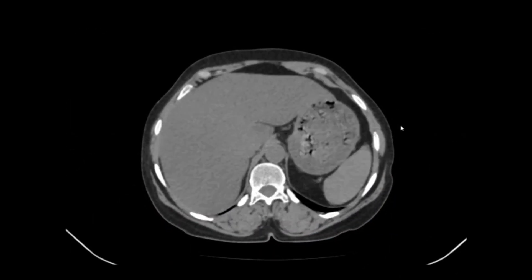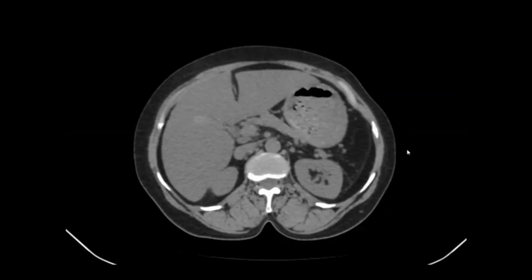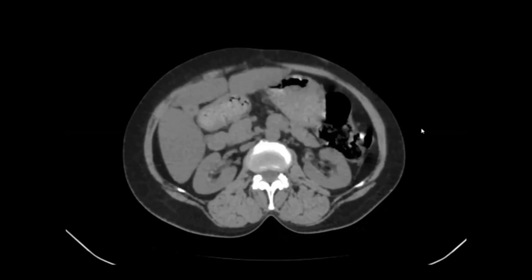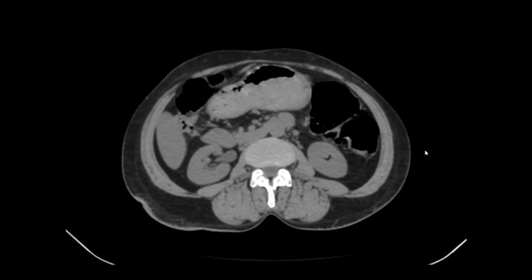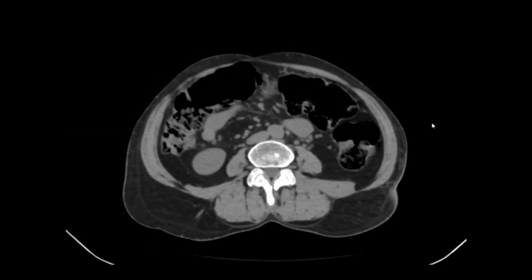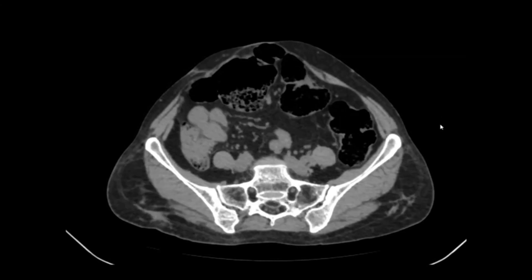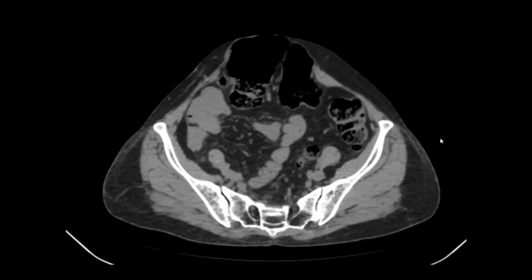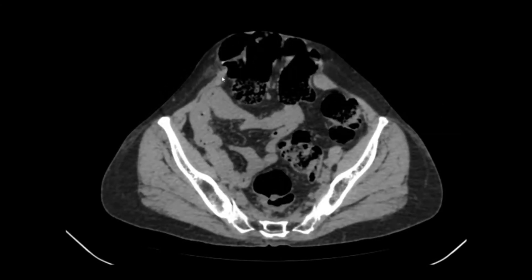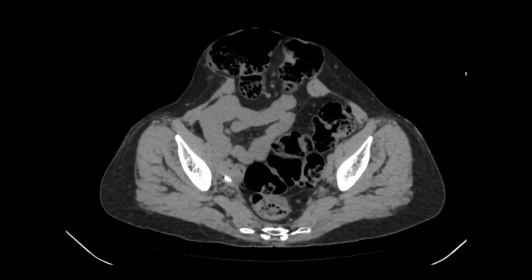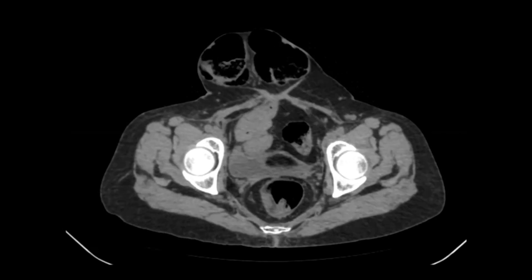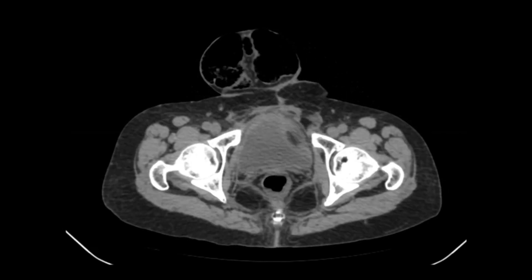So we see a hernia case in which anterior abdominal wall hernia is present. Two important sections are required on CT for calculation of loss of domain. One is the axial cuts. Here as we go lower down in the abdomen we can see the bowel herniating through the defect in the anterior abdominal wall into the hernia sac. Along with the bowel we can see the omentum and its vessels.